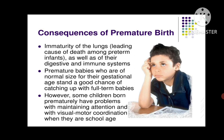Premature babies who are of normal size for their gestational age stand a good chance of catching up with full-term babies. Sometimes a baby's weight and body growth may be near or around its gestational age, giving them better chances of achieving overall milestones. However, some children born prematurely have problems with maintaining attention and with visual-motor coordination when they are school age.